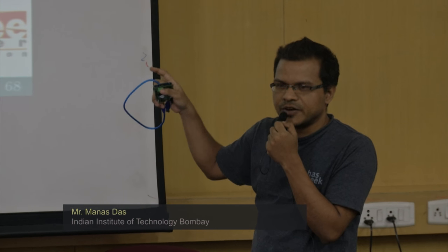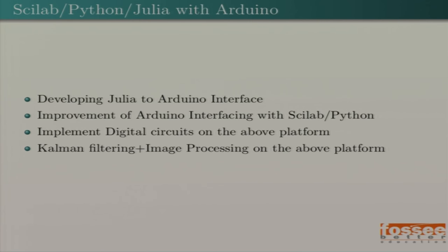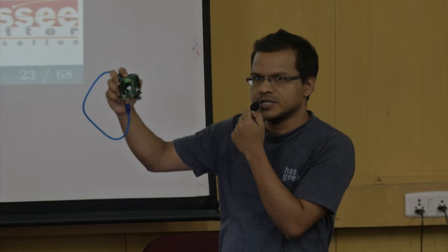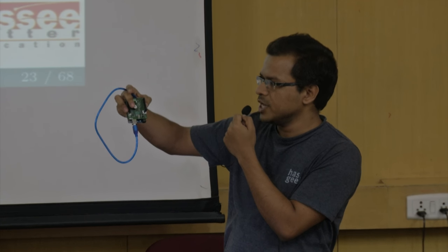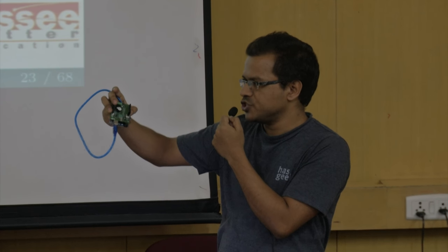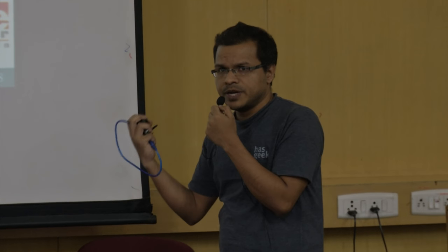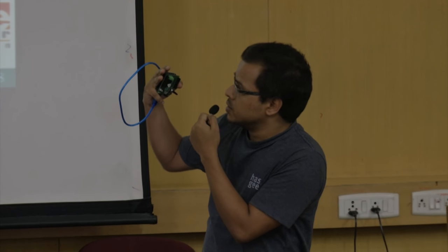The last language is Julia — it's a newly developed language; it's been hardly around seven or eight years that development is taking place. The main purpose of this project is that you don't have to write C code for your embedded experiments. Writing a program in C is rather difficult compared to Scilab, Python, or Julia, because these are all high-level languages. Last year, we started the project, and the work already done is Scilab-to-Arduino interfacing and Python-to-Arduino interfacing.